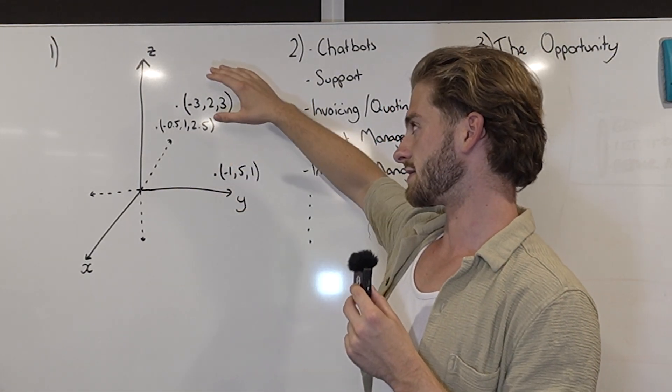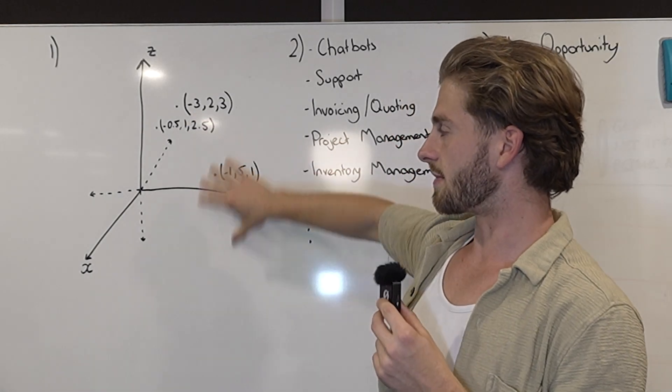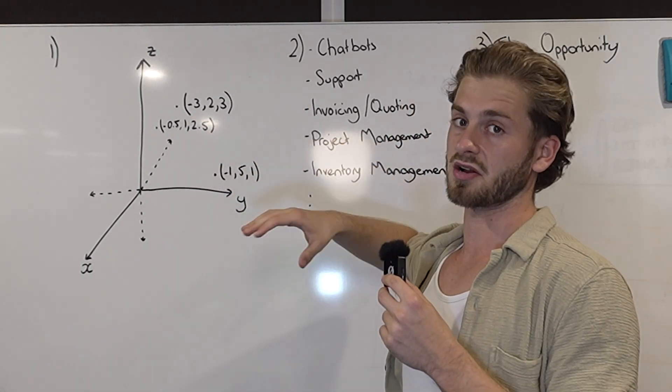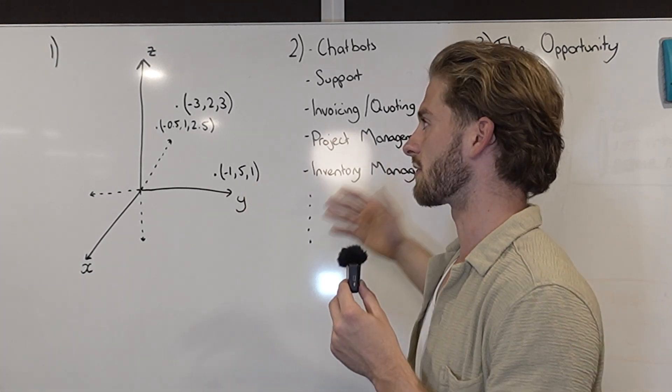We've got an x-axis, a y-axis and a z-axis, and in that three-dimensional space we can plot coordinates onto that Cartesian plane or that map if you want to think of it like that.